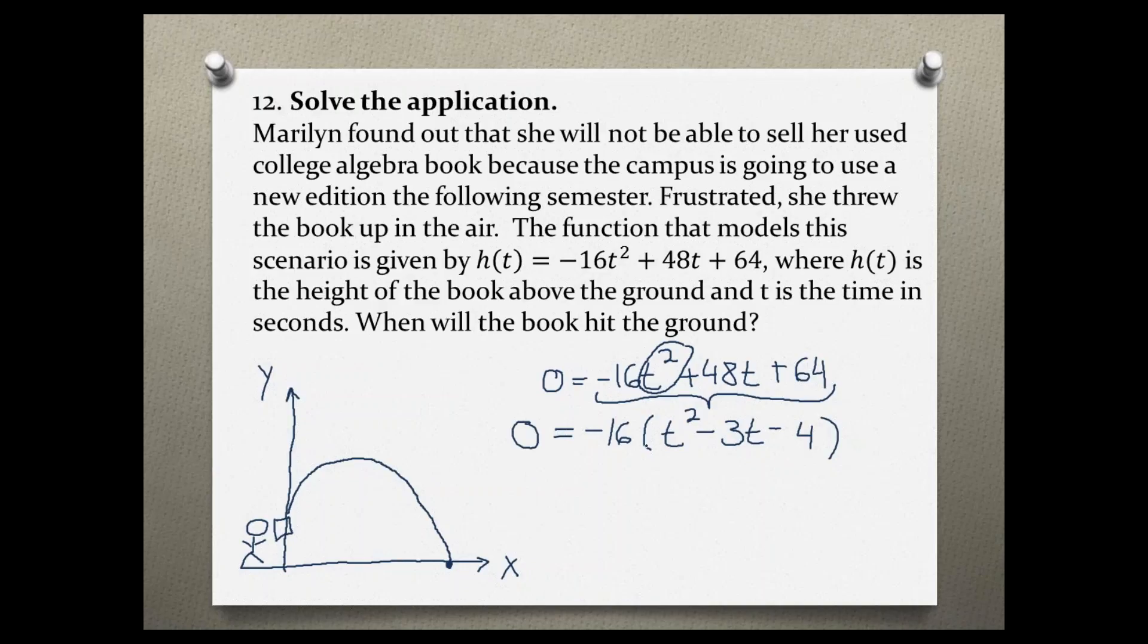All that is equal to 0. So to move the 16 to the other side and out of the way, we can divide by negative 16 on both sides. And then we have 0 divided by negative 16 is just 0, and over here that cancels out, so we're left with t squared minus 3t minus 4.